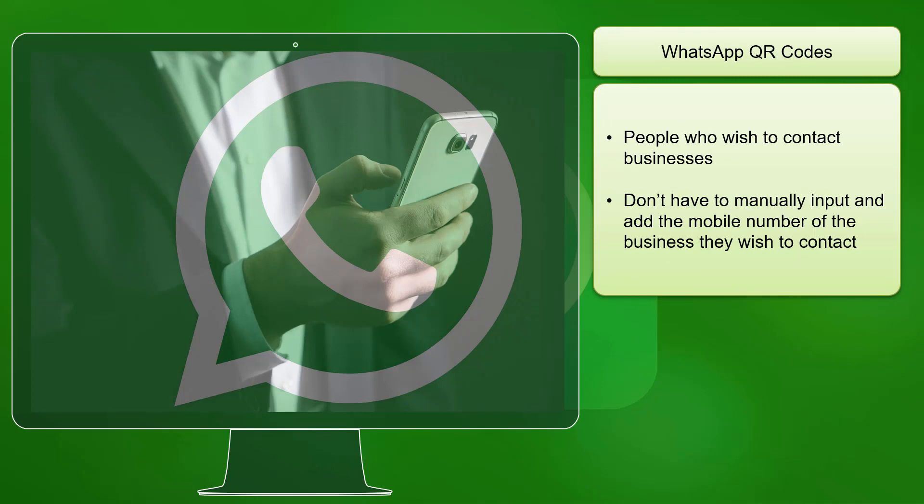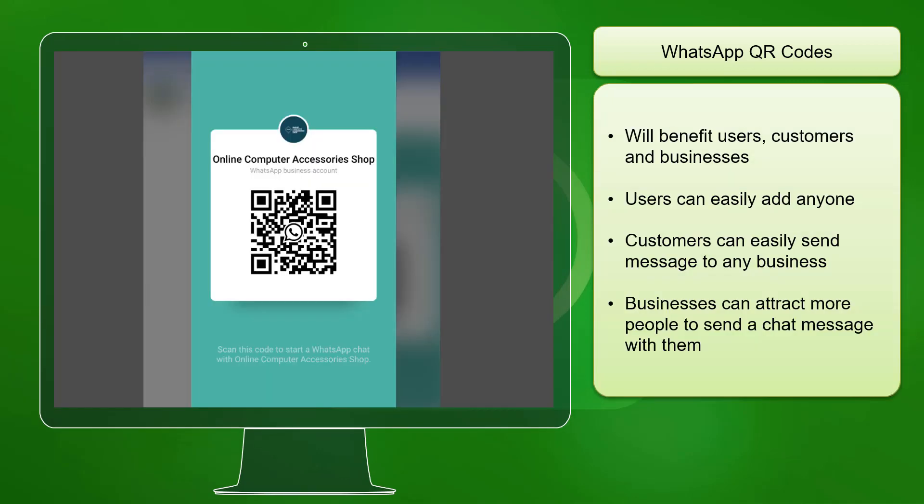With the QR code feature, people who wish to send a message or contact any businesses, such as a restaurant or clothing shop on WhatsApp, will no longer have to go through manually adding the business phone number to their mobile device's contacts list. The new QR code feature will benefit users, customers, and businesses.